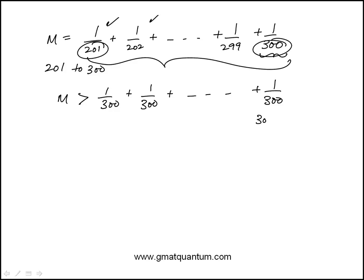To count that, I subtract the two and then add 1. So there's 100 terms, which means this sum is 100 over 300, which is 1 third. So the lower limit is 1 third. M has to be greater than 1 third.